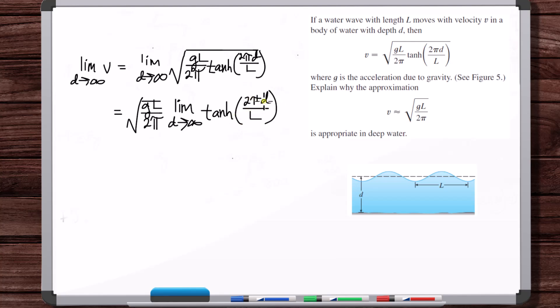So as D approaches infinity, this 2πD over L approaches infinity. I mean, they don't tell us anything about if L is a function of D.